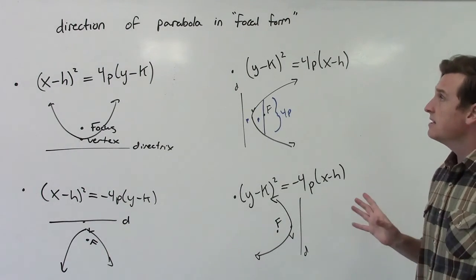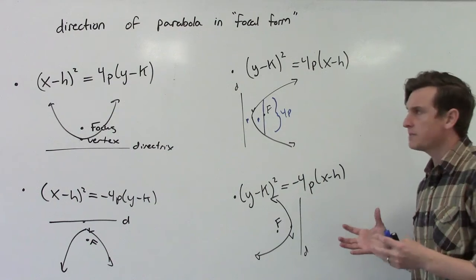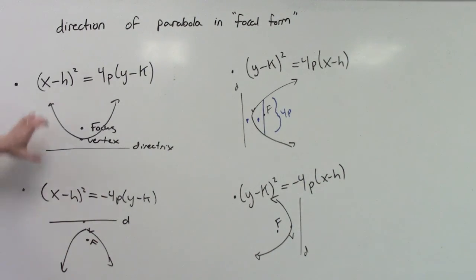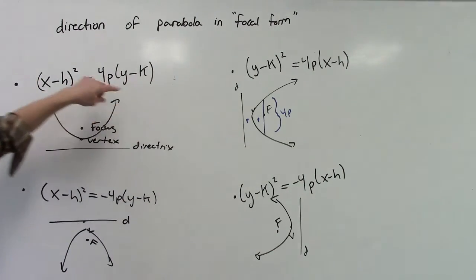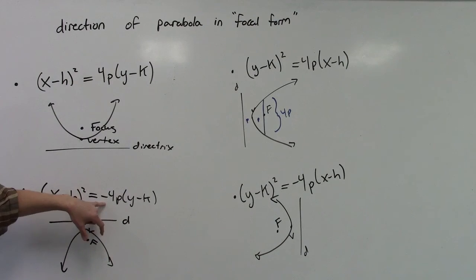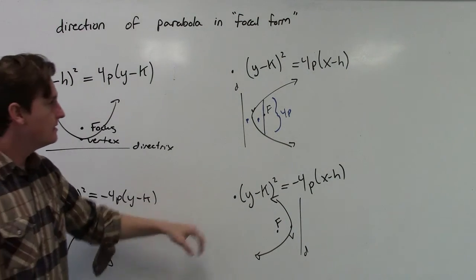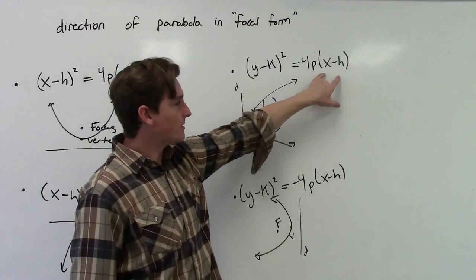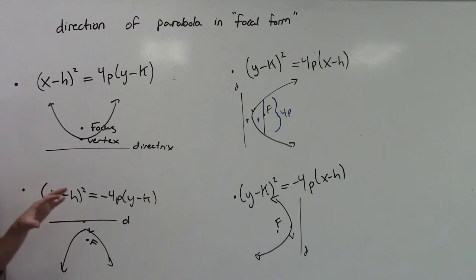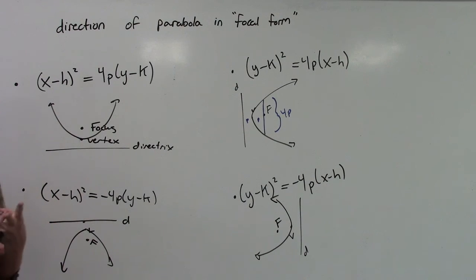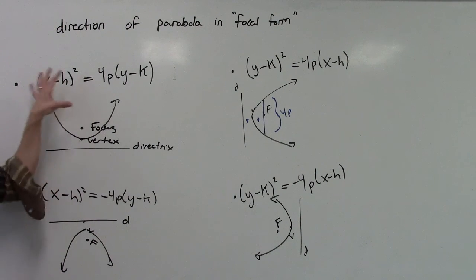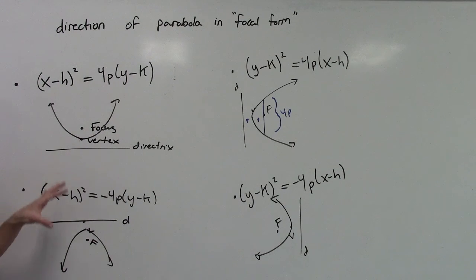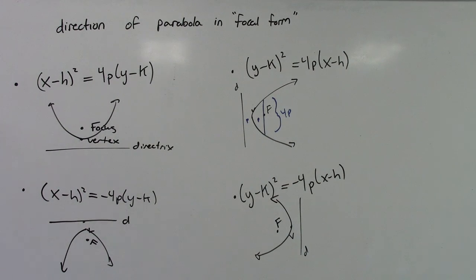So these are the four different versions of the parabola in focal form. They're all very similar — they all have a squared piece on the left, they have the 4p which is the focal width, and sometimes that can be negative if we're going in the negative direction (down or left), and then the non-squared piece. What we need to be able to do in homework is look at an equation in focal form, identify where the vertex is, determine the direction it opens, and then find the focus and directrix. The next video will do some examples and put this into practice.